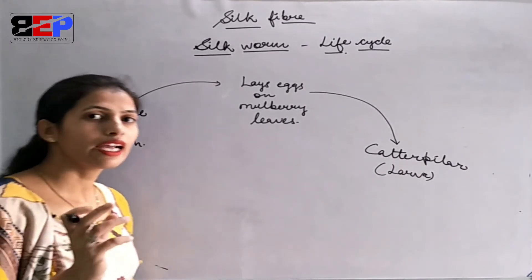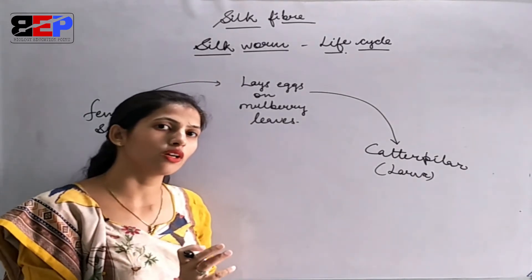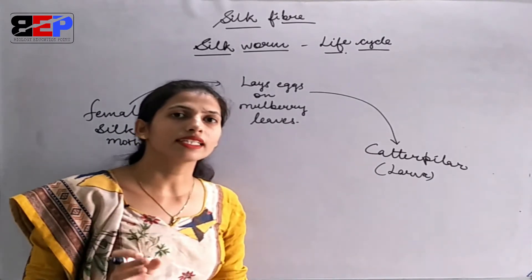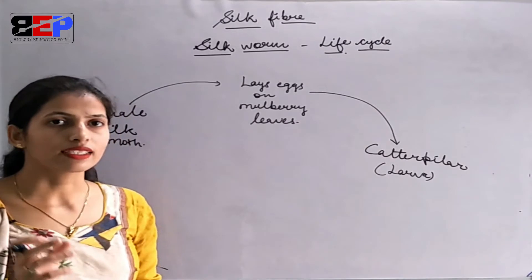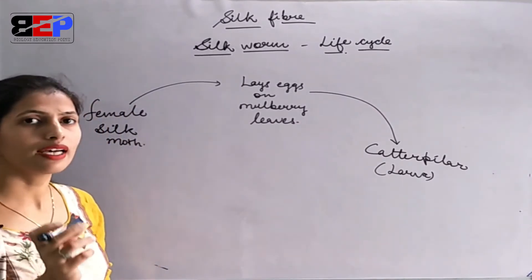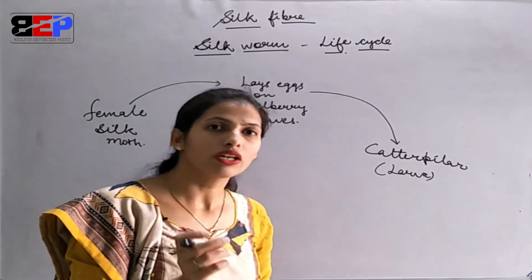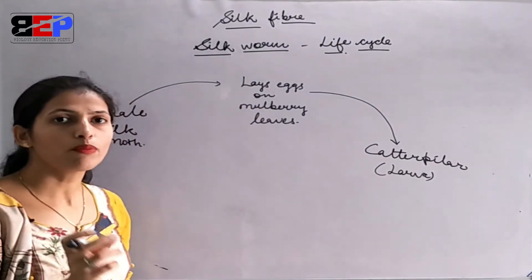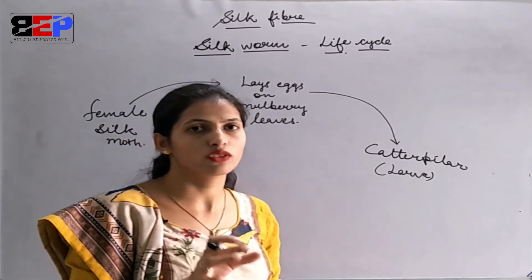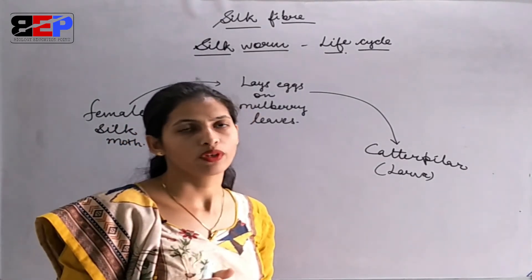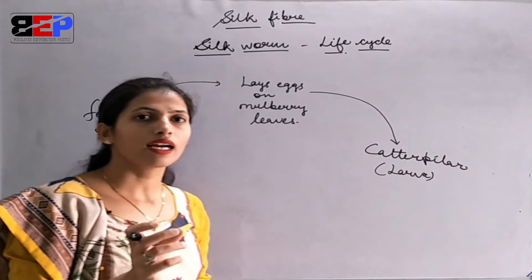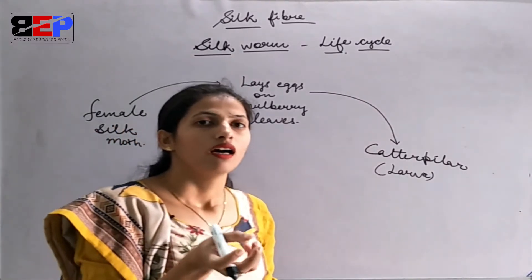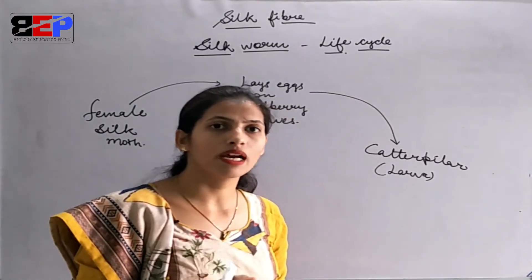The first stage is the larva, then comes the next stage. When it is fully fed, a liquid fluid-like substance is released, which is proteinaceous in nature. This protein is called fibroin protein, and this fluid is secreted from the mouth of the caterpillar.